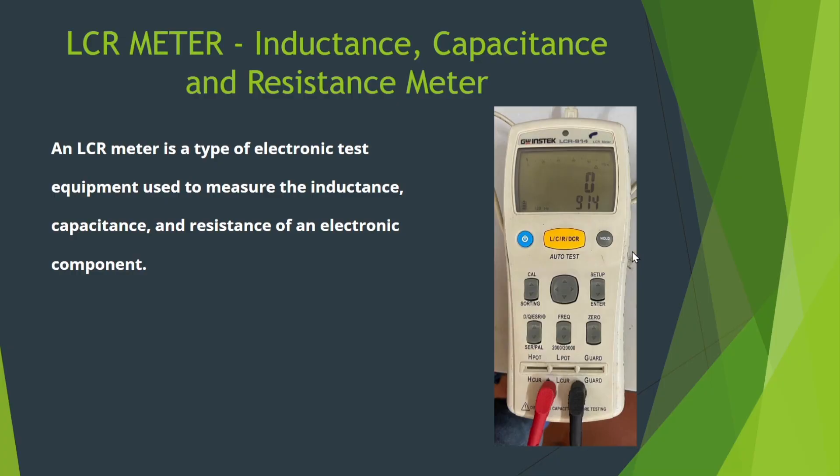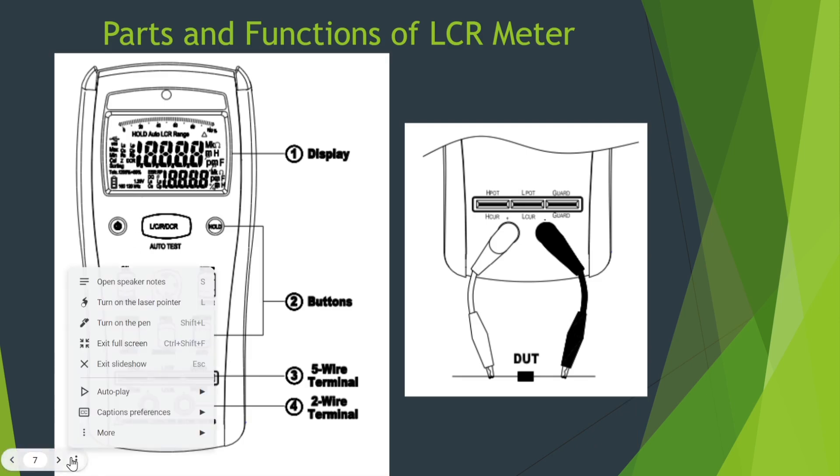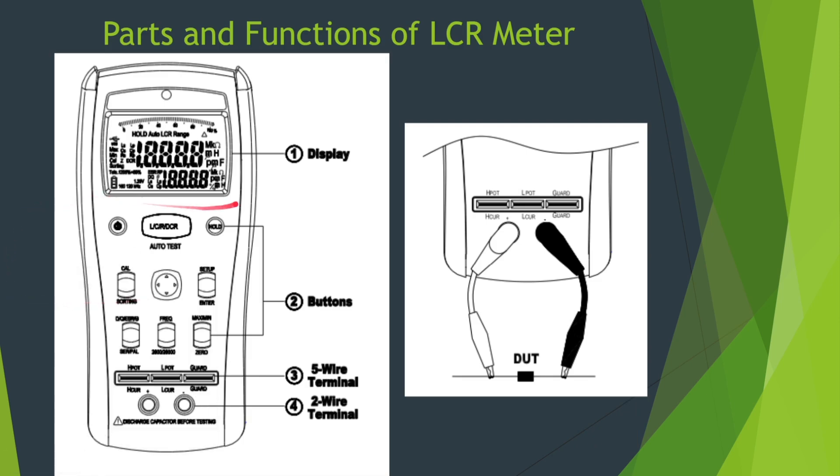LCR meter: L stands for inductance, C stands for capacitance and R stands for resistance. LCR meter is used for electronic testing of equipment to measure the inductance, capacitance and resistance of electronic circuit. Let's see the parts of the meter. This is the display of the meter. This is the auto test button. You can press it to set it on L, R or C.